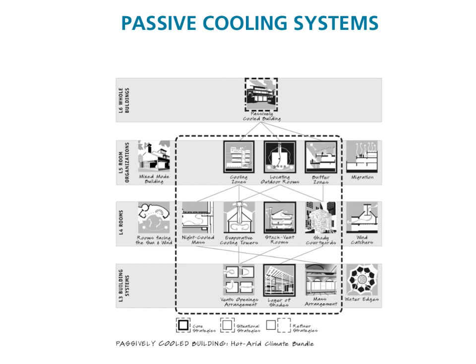This lecture will be mostly dealing with level four, the scale of the rooms. We'll look at a variety of different systems like night cooled masses, evaporative cooling towers, stack ventilation, wind catchers, and also cross ventilation. You can take a look for more information about the various different passive cooling systems and how they compare with each other in the passive cooling bundle, but we're going to break those down one at a time here.